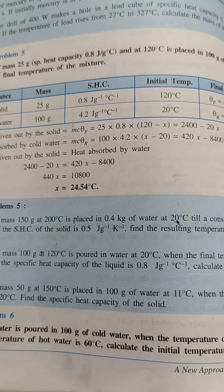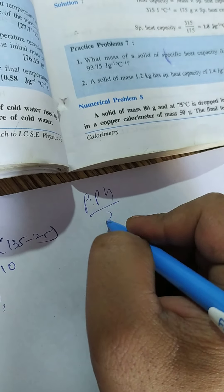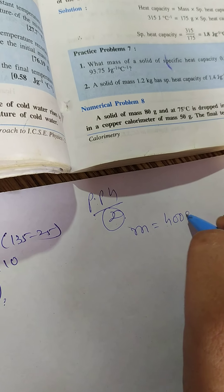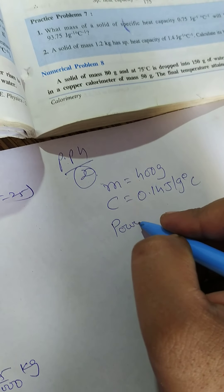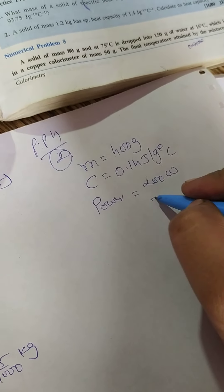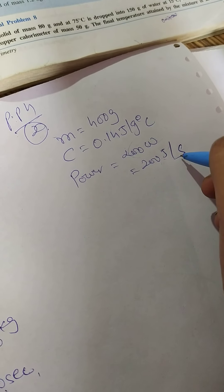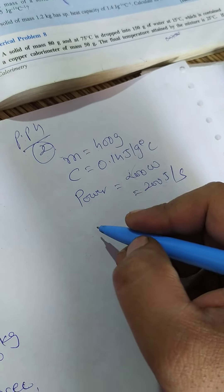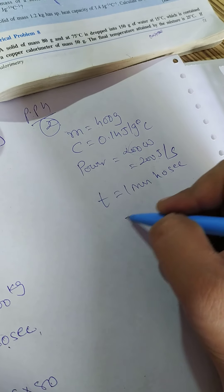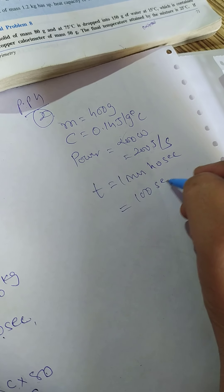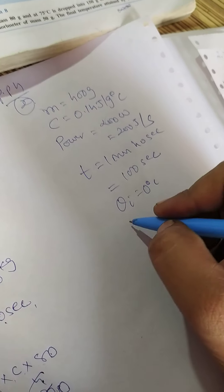So this is again a very simple question from calorimetry and with the help of the same formula H equals mc theta it can be solved. Noting down the given data, that the mass of the mercury given is 400 grams and specific capacity is also given 0.14 joules per gram degree centigrade. And heat is heated by a heater which has a power of 200 watts. Watts stands for joules per second. That means a heater of 200 watt can give 200 joules of heat energy every second. And this heater remains on for the time 1 minute and 40 seconds. Converting this completely into seconds, 60 seconds 40 seconds, that is 100 seconds. And they have given that initial temperature of the mercury is 0 degree centigrade. What will be the final temperature?